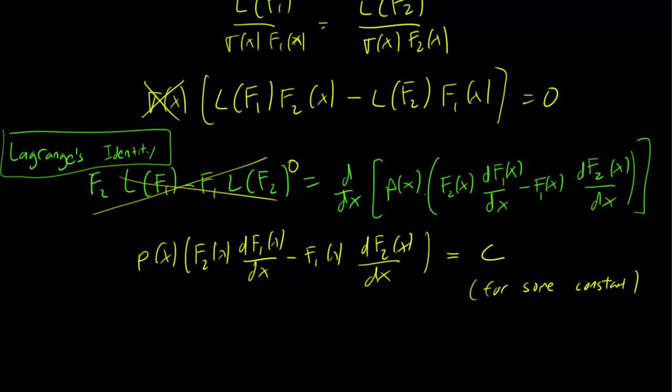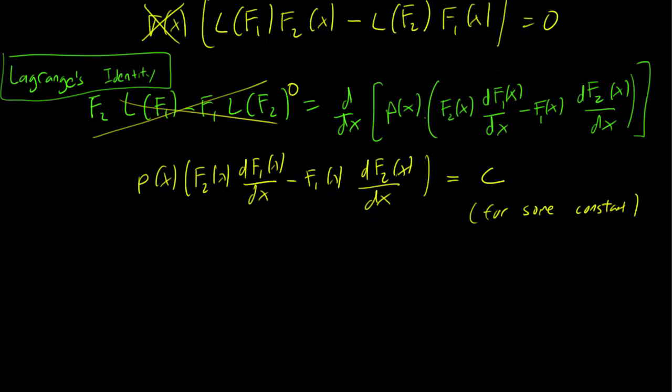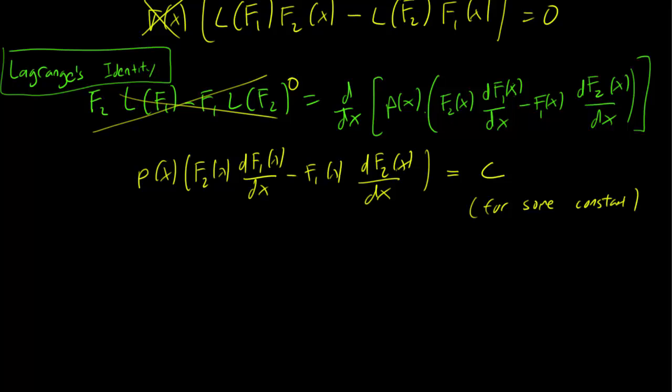This is 0. Alright. Now the question remains as to what constant is this going to be? And what rescues us once more are going to be the boundary conditions. Now you may remember that we have these boundary conditions beta1 f1x, plus, no, let's call it a, plus beta2 f1 prime a equals 0. And both f1 and f2 obey these boundary conditions.